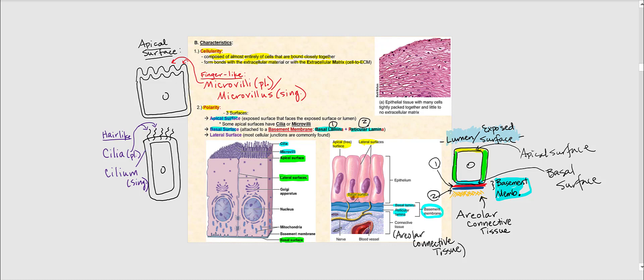Epithelial cells are anchored to the underlying basement membrane via hemidesmosomes. Directly deep to the basement membrane is connective tissue — specifically areolar connective tissue. This connective tissue layer is directly deep to the reticular lamina, which is one component of the basement membrane.